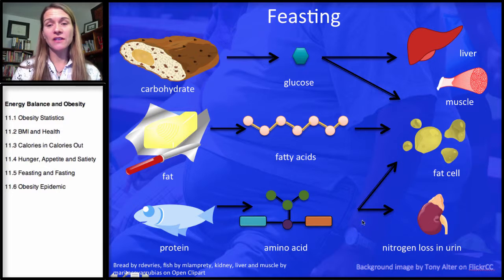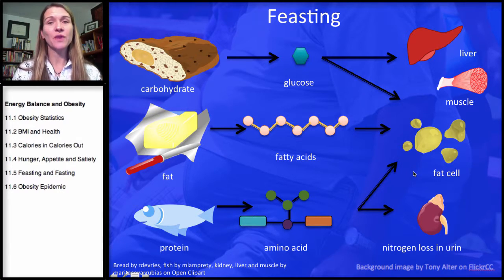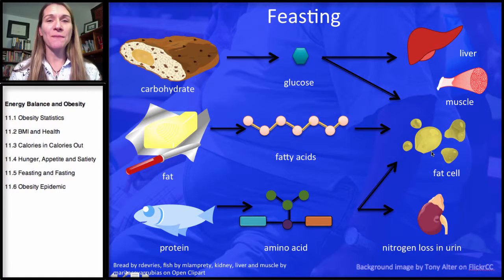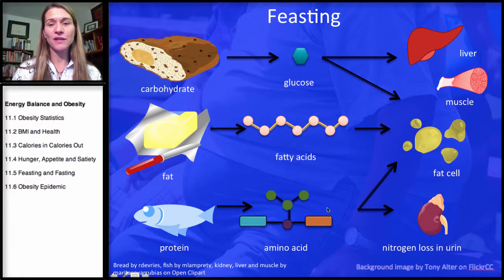If we consume too much protein, we have nitrogen loss in the urine, and the amino acid ends up being broken down and converted to fat, stored as fat. So the overall theme here: when you're eating too much, it really doesn't matter what you're eating. If you don't need it for energy and you've filled up your other stores, it gets stored as fat.